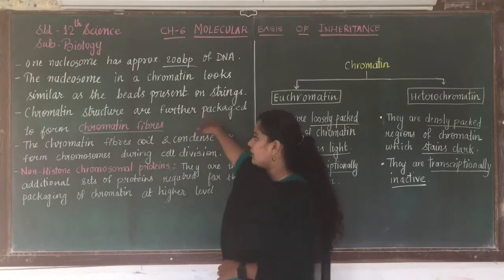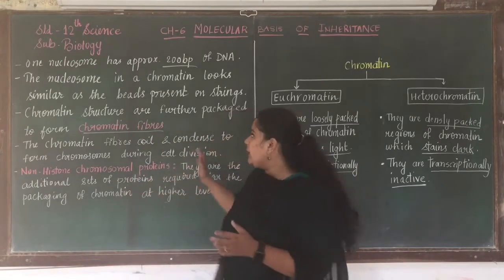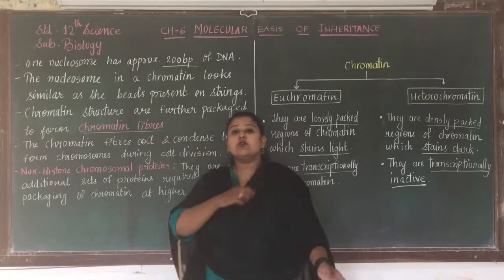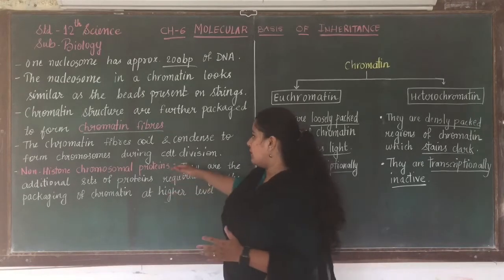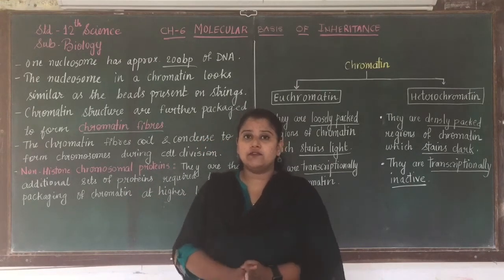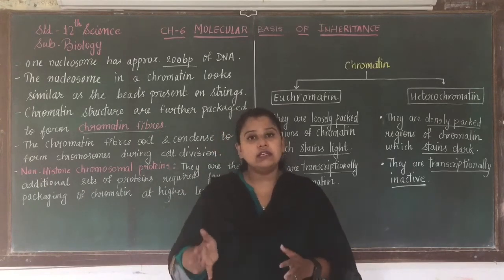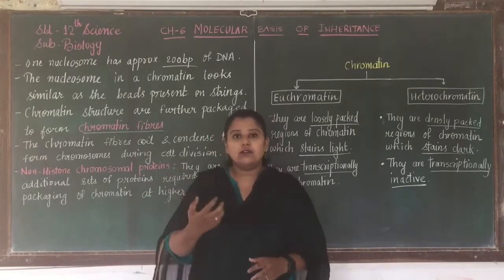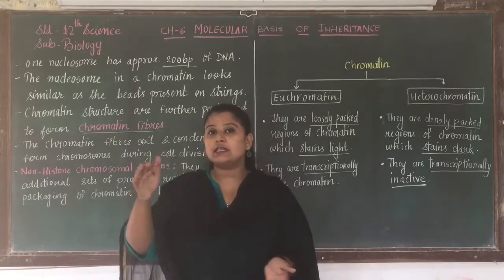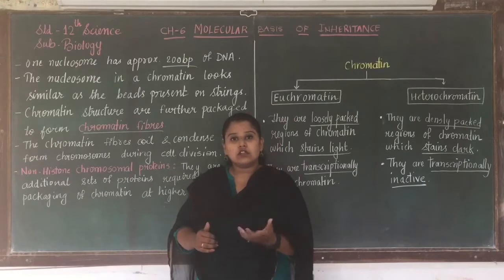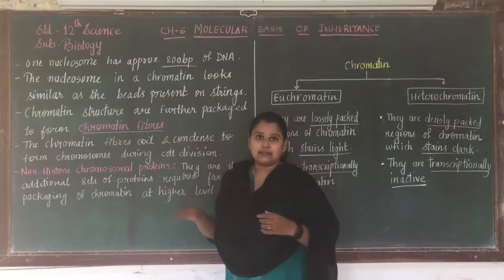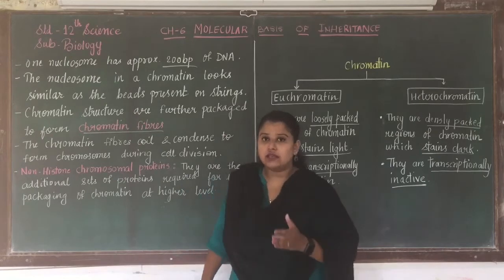Chromatin structures are further packaged by H1 histone to form chromatin fibres. The chromatin fibres then coil and condense to form chromosomes during cell division — which you have already studied in standard 11. When cell division is about to take place, the DNA present inside the nucleus condenses and coils to form structures known as chromosomes.